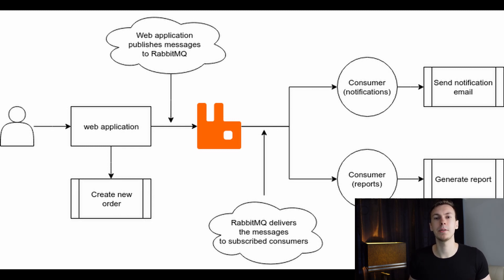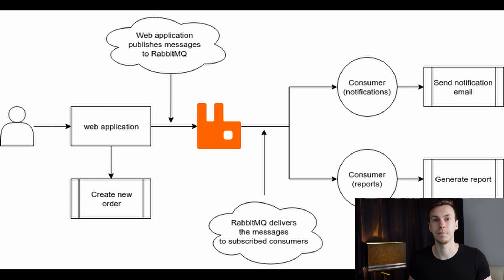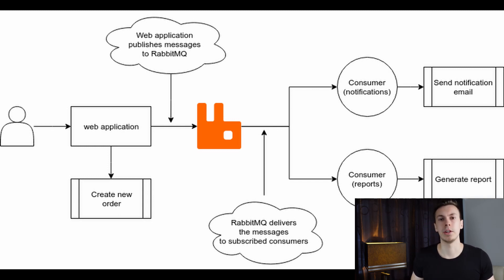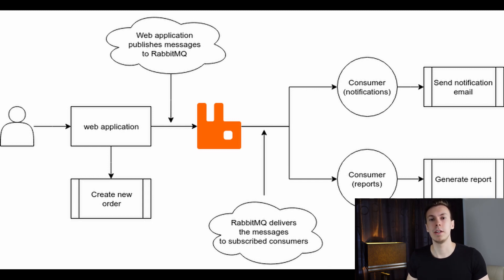Consumers are separate programs that work independently from each other and from the web application itself. They are executed in the background and are completely independent — the servers running consumers can even be located in different locations, so you can have a separate server for every single consumer. In our updated flow, the web application only creates a new order, then publishes two messages: a notifications message and a reports message.